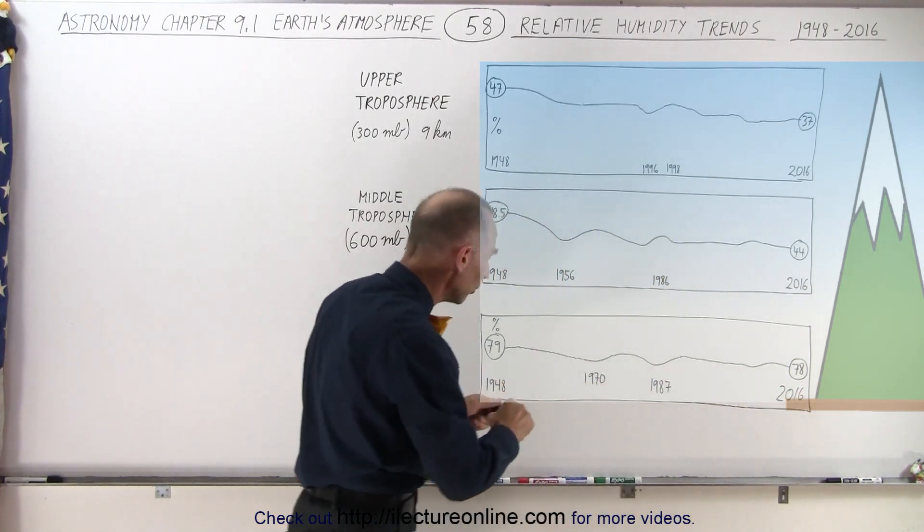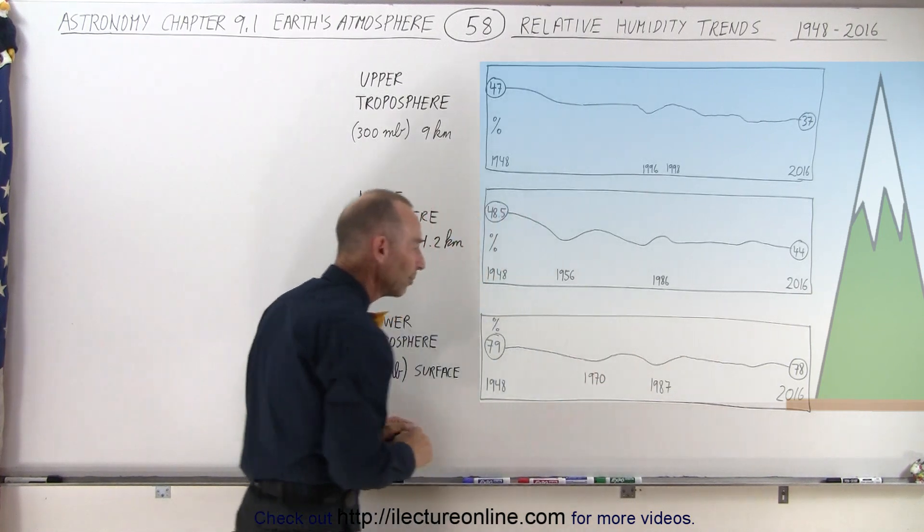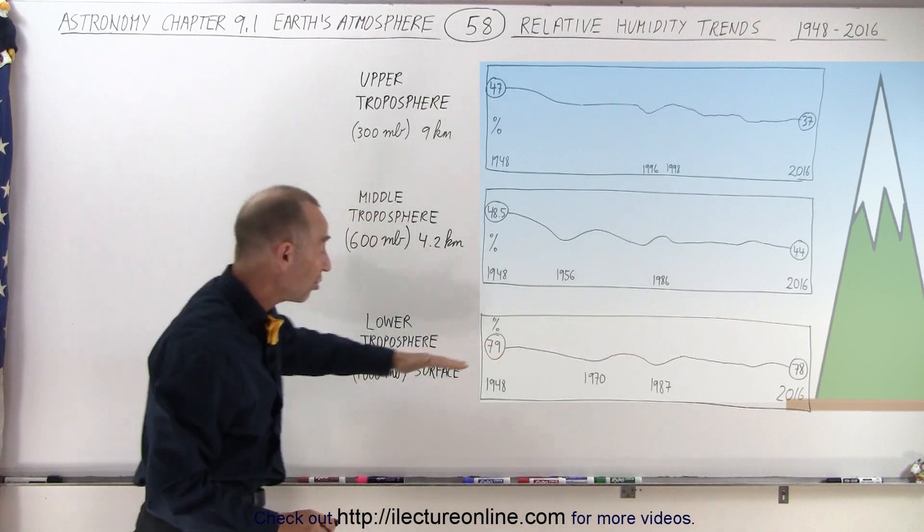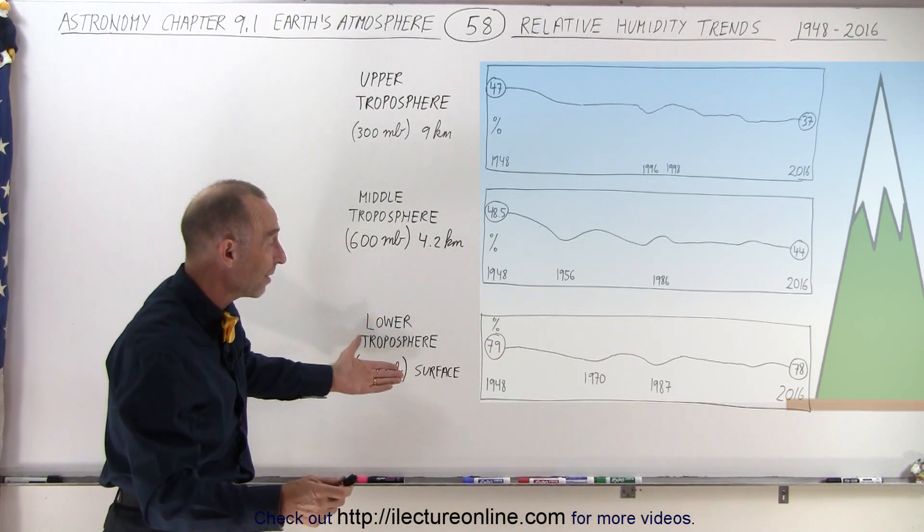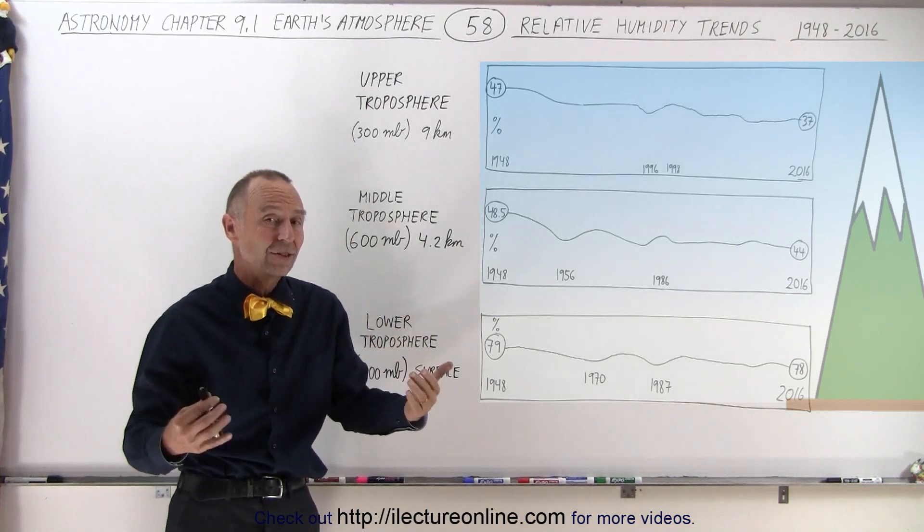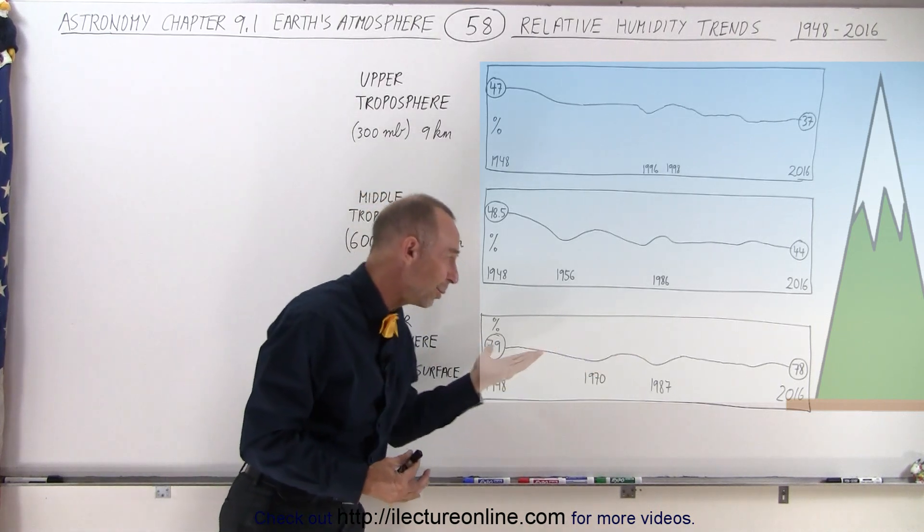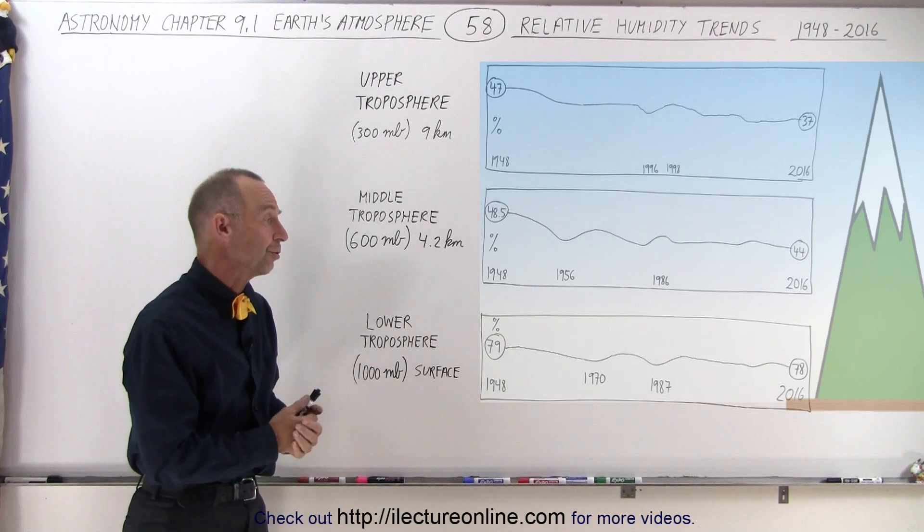Notice there were some dips back in the 1970s and 1987, some dips in the relative humidity, but all in all, not a lot of change since 1948. So we're spanning about a 60 to 70 year period. You can see the lower troposphere has not seen any significant change either downward or upward, which means there's been consistency in the relative humidity of the troposphere.